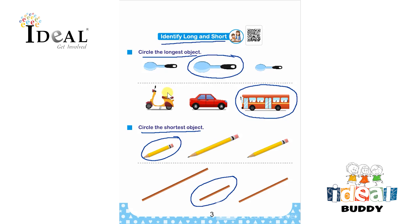They have to identify and circle the longest and shortest objects to complete the worksheet. You can give some real life examples, showing two or three objects to demonstrate which is the longest and which is the shortest, so they will understand the concept more.